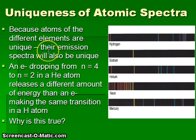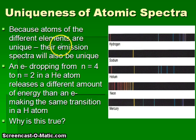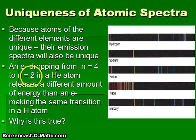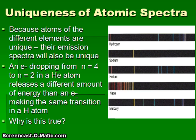Why do different elements give off unique emission fingerprints? This is because the atoms of different elements are unique — their emission spectra are different, largely because the nuclei of atoms for different elements are not the same. They have differing numbers of protons and neutrons. Therefore, an electron dropping from energy level four to level two in a helium atom releases a different amount of energy than the same level four to level two jump in a hydrogen atom.